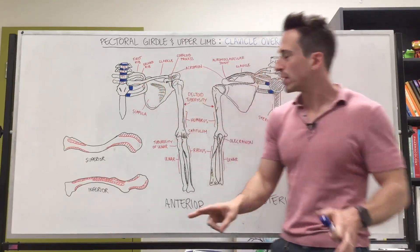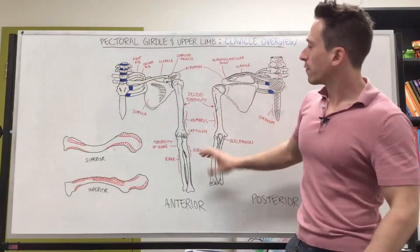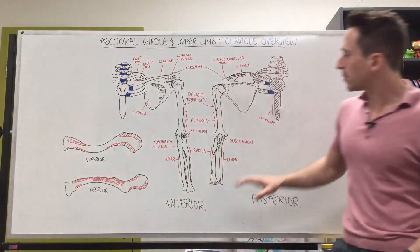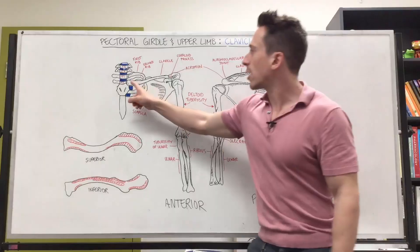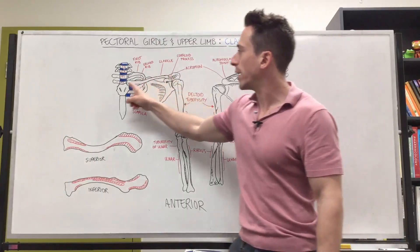Now I've drawn two diagrams. This is the pectoral girdle from a front view, anterior. This is the pectoral girdle from a posterior view. And you can see that horizontal clavicle right there.